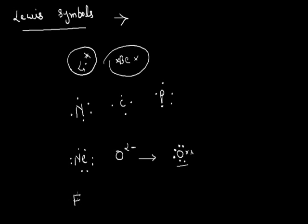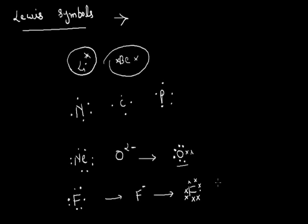Similarly, F (fluorine) — its Lewis Symbol shows seven valence electrons. But for F minus, its Lewis Symbol shows eight electrons, since fluorine gains one electron to form the fluoride ion. So we can draw Lewis Symbols for any neutral species as well as ionic species.